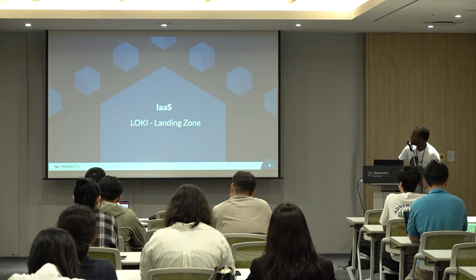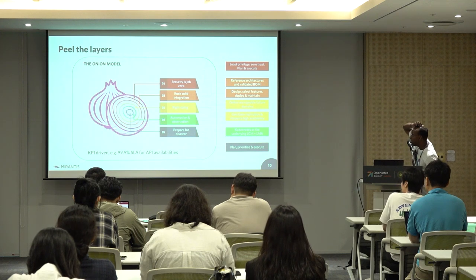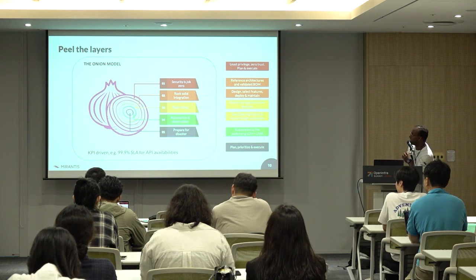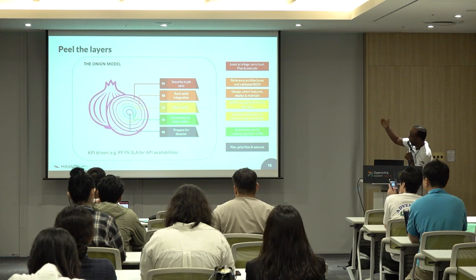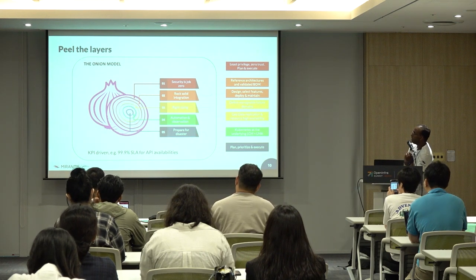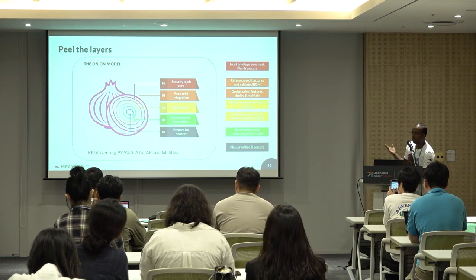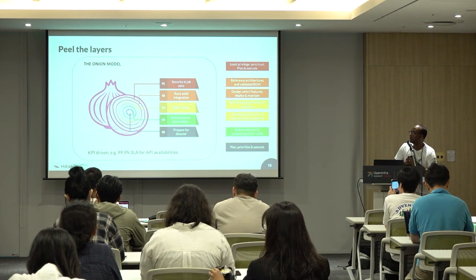Let's start with the first layer — the IaaS layer. We basically build it with five different layers in terms of an onion model. The first one is security.